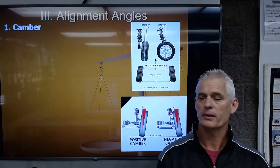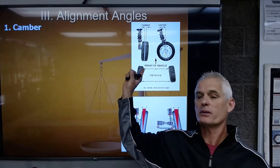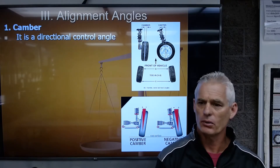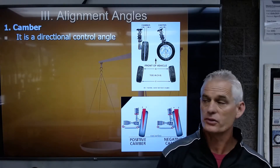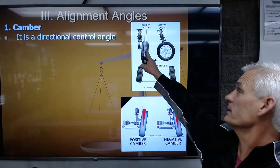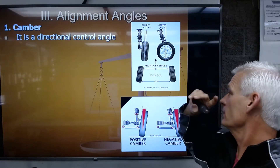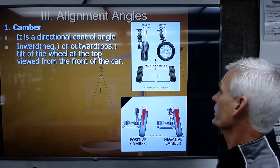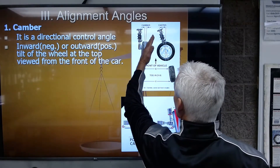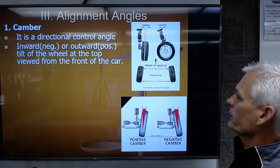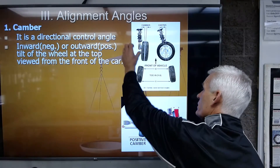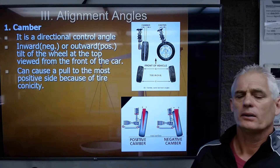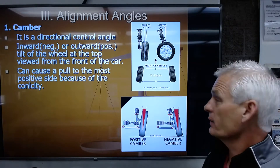The first alignment angle is camber — a directional control angle. It's the amount of lean of the tire toward or away from the engine, viewed from the front of the car. Positive camber leans away from the engine; negative camber leans toward it. Camber causes a pull to the most positive side because of tire conicity.